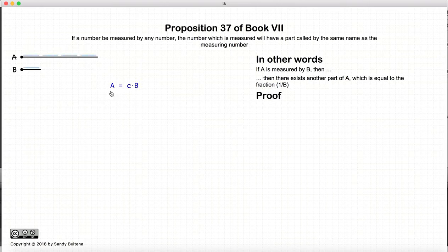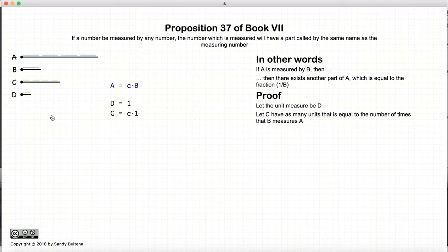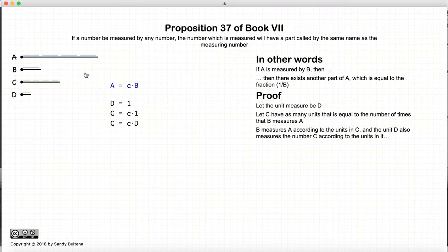So let's prove this. We have that b measures a. Let the unit number be d, and let c have as many units in it as the number of times that b measures a. Now b measures a according to the units in c, and d also measures c according to the units in c. So to sum that up, d measures c the same number of times that b measures a.